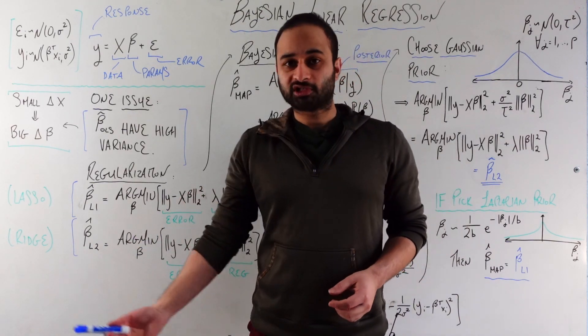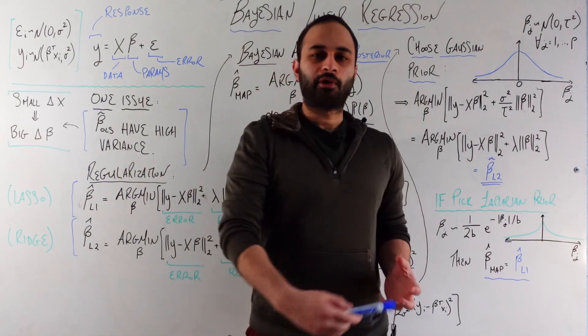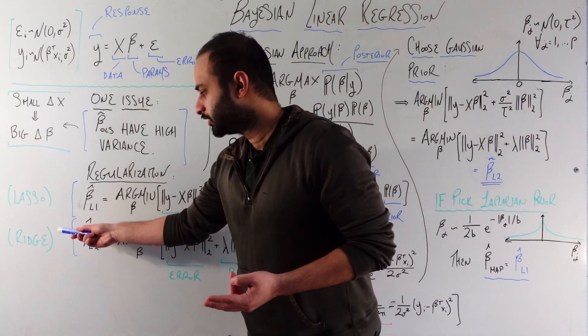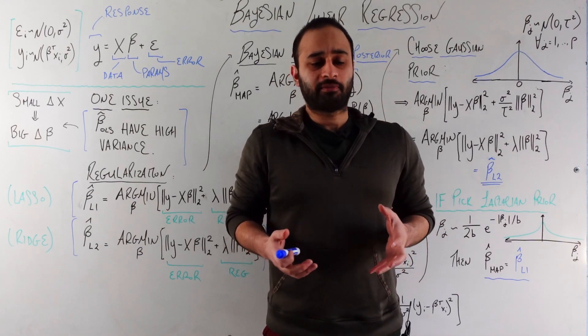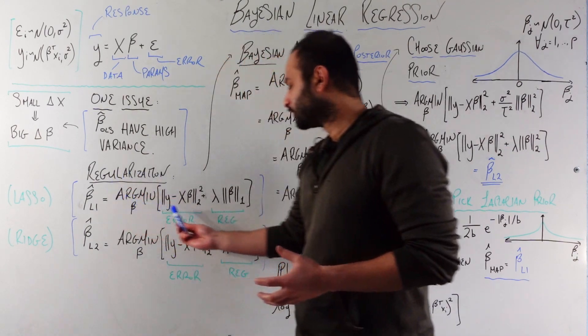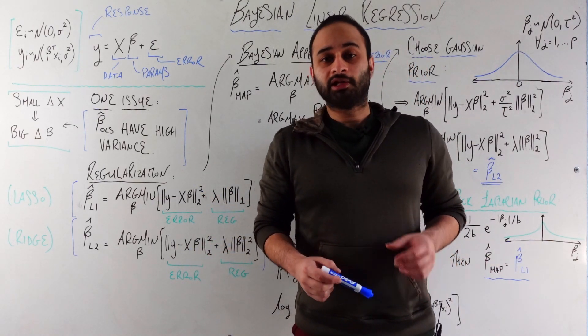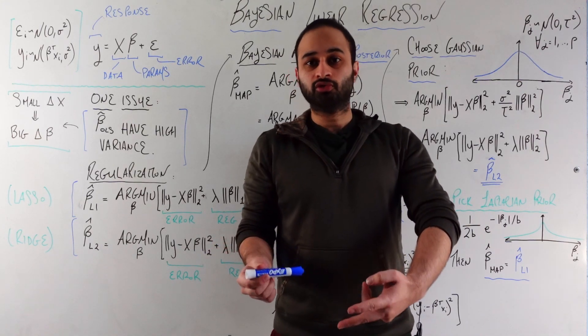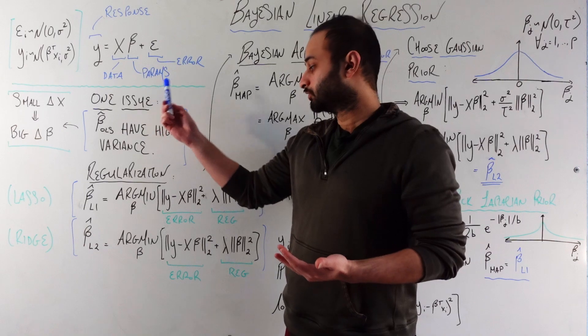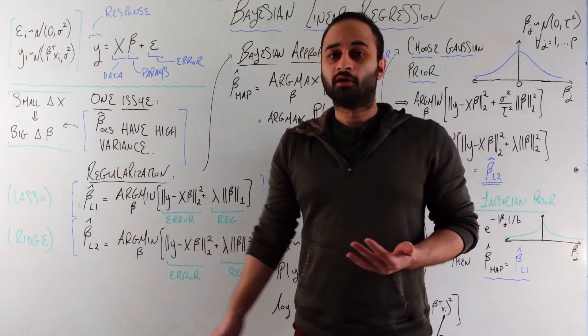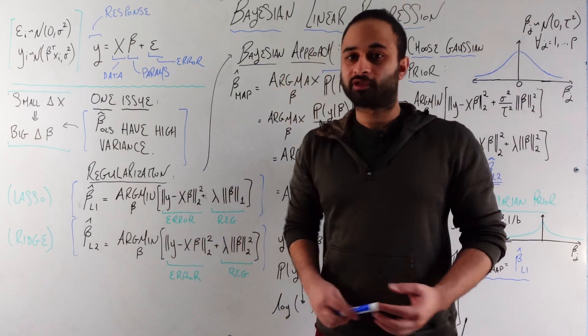We don't want small changes to our training data to change the model that much. One of the ways we solve for this, and the way that's probably most familiar to you right now, is using this idea of regularization. It comes in these two main flavors, which is lasso and ridge, also known as using the L1 norm versus the L2 norm. They vary slightly, but both of them have the same goal, which is to solve a slightly different optimization problem.